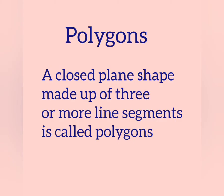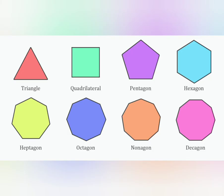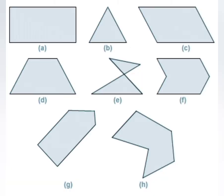To say more clearly, a closed plane shape made up of three or more line segments is called polygons. There are two different types of polygons: regular polygons and irregular polygons.